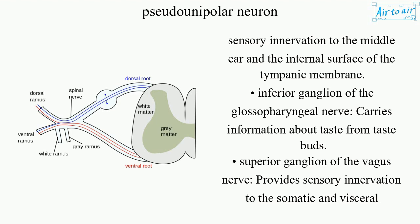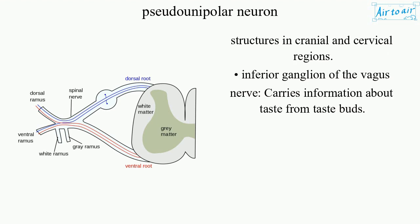Superior ganglion of the vagus nerve — provides sensory innervation to the somatic and visceral structures in cranial and cervical regions. Inferior ganglion of the vagus nerve — carries information about taste from taste buds.